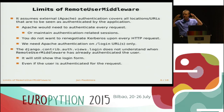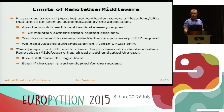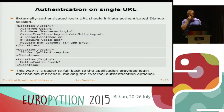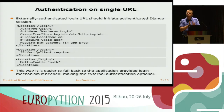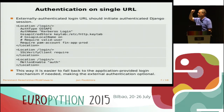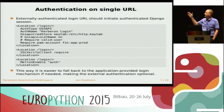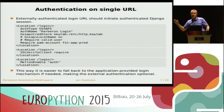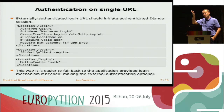The second problem is that if you use the standard auth views login, it does not really understand when the user has already authenticated via some middleware. It still shows the login page even if the Django authentication session has already been created. We want external authentication — be it Kerberos, GSS-API, SSL, or SAML — to be enabled only on one login URL.